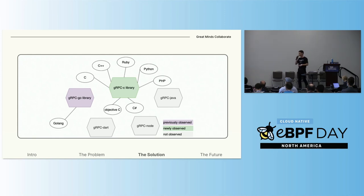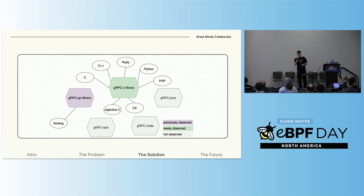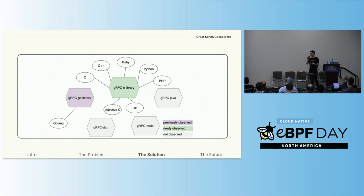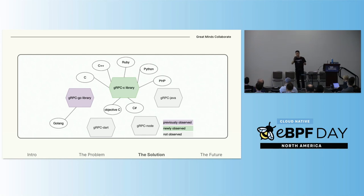Uprobe hacking was also used in the Pixie open source project to monitor the Golang gRPC library. With collaboration, Pixie now supports tracing both libraries — gRPC-C and gRPC-Go — and all the languages that use them. You can see the code to both solutions on GitHub. There are still some languages left unsupported — you can see three examples in the diagram.